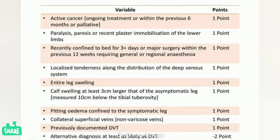Wells Score variables, each scoring one point: active cancer; paralysis or recent plaster immobilization of the lower limb; recently confined to bed for three or more days or major surgery within the previous 12 weeks; localized tenderness along the DVT system; entire leg swelling; calf swelling at least 3 cm larger; pitting edema confined to the symptomatic leg; collateral superficial veins; and previously documented DVT. Alternative diagnosis at least as likely as DVT scores minus two points.